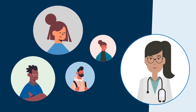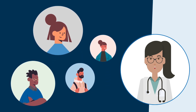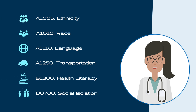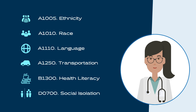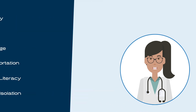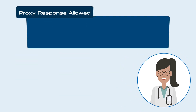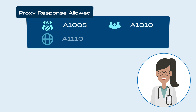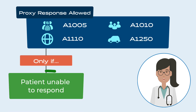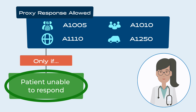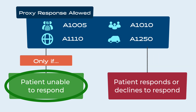While there are many options for who can be identified as a proxy for a patient, the guidance is specific about when and how a proxy response can be used for the SDOH items. A proxy response may be used to code A1005 ethnicity, A1010 race, A1110 language, and A1250 transportation, only in cases where the patient is unable to respond. If the patient responds or declines to respond, a proxy response cannot be used to code these items.